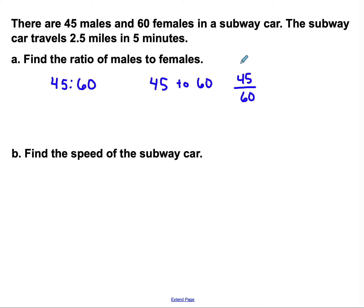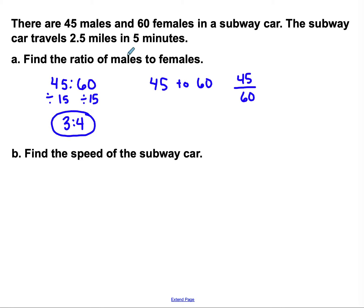Then I need to simplify it, just like I would if it were a fraction. I look for a common factor — something I can divide them both by. I know that both 45 and 60 are divisible by 15. 45 divided by 15 is 3, and 60 divided by 15 is 4. So the ratio of males to females is 3 to 4.